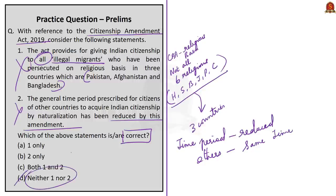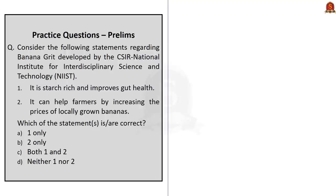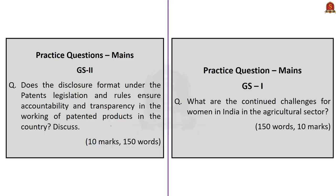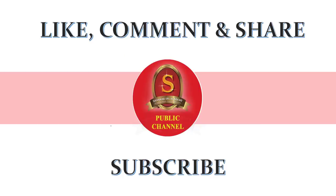Now let us take up the final prelims practice question. Consider the following statements regarding banana grit developed by the CSIR National Institute for Interdisciplinary Science and Technology. Statement 1: it is starch-rich and improves gut health. Statement 2: it can help farmers by increasing the prices of locally grown bananas. Both statements 1 and 2 are correct. Therefore, the right answer is option C, both 1 and 2. The list of mains practice questions is displayed below — write the answer and post it in the comment section. With this, we come to the end of today's news analysis. If you like the video, don't forget to like, comment and share, and do subscribe to Shankar IAS Academy's YouTube channel for updates regarding UPSC civil service preparation.